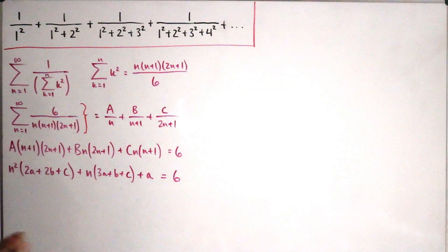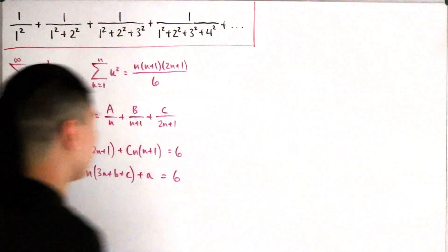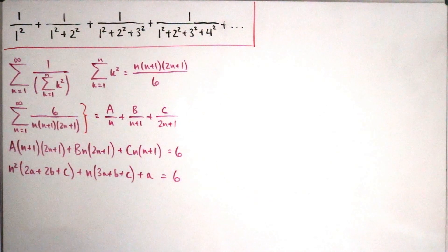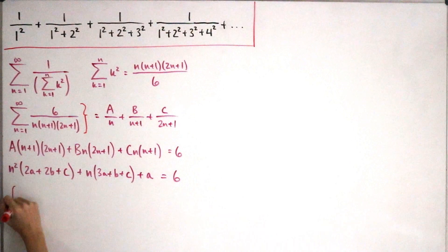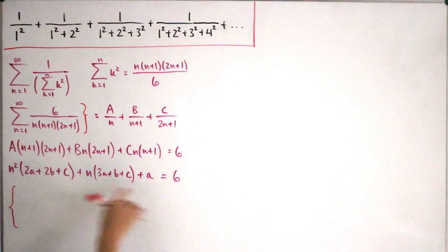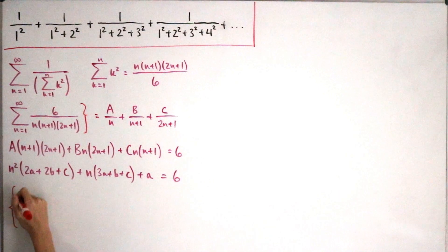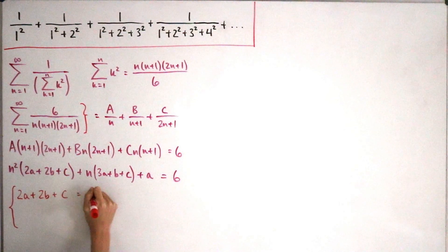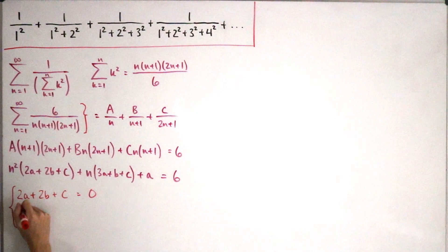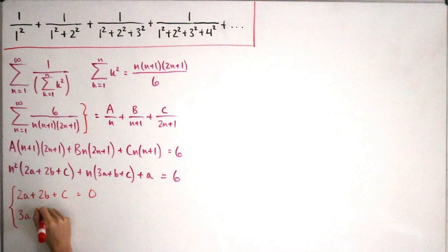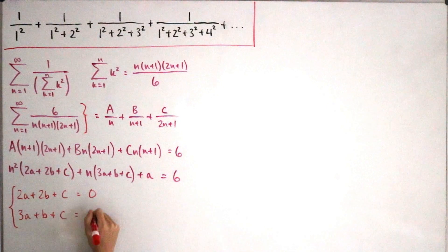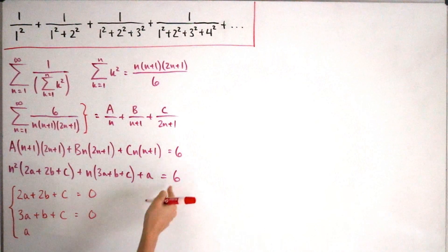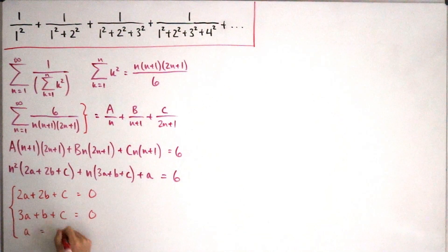This is straightforward to solve as a linear system of equations. Setting the coefficient of n² equal to zero: 2A + 2B + C = 0. The coefficient of n also equals zero: 3A + B + C = 0. And the constant coefficient equals 6: A = 6.